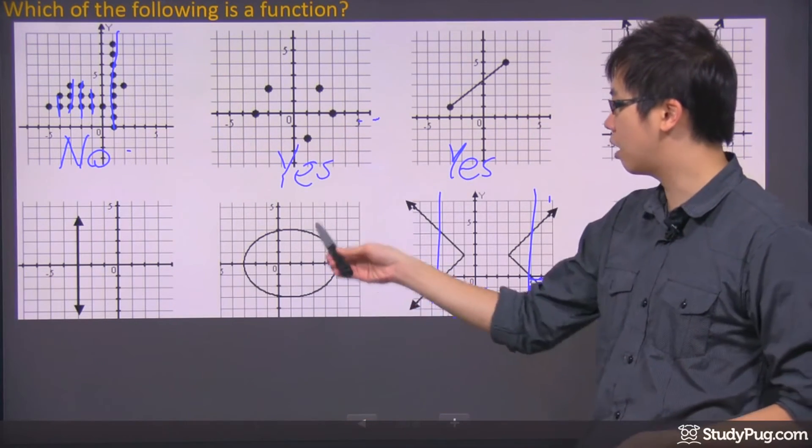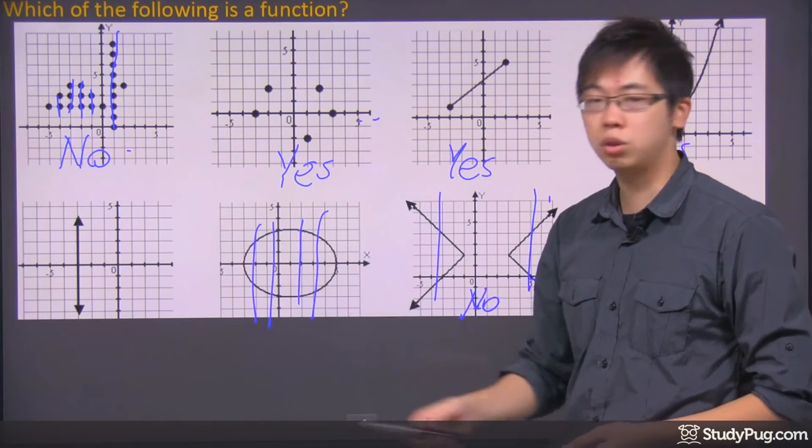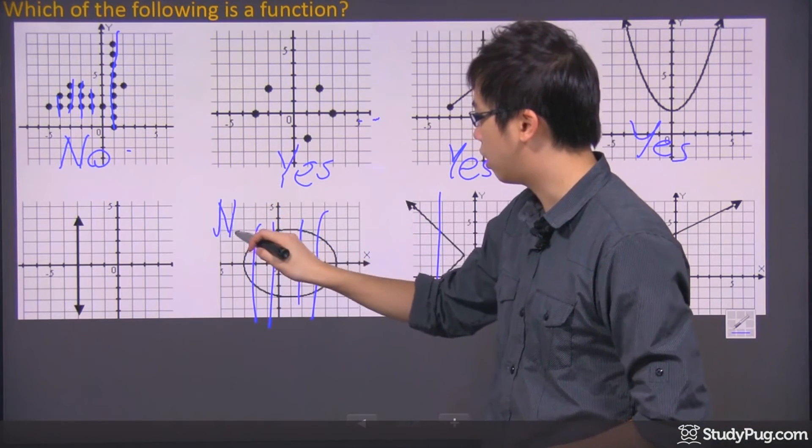The circle one, let's take a look. You touch the graph more than twice, all over the place. So this is not a function right here.